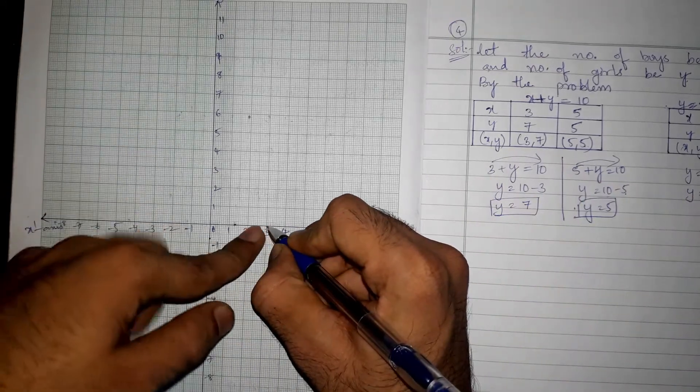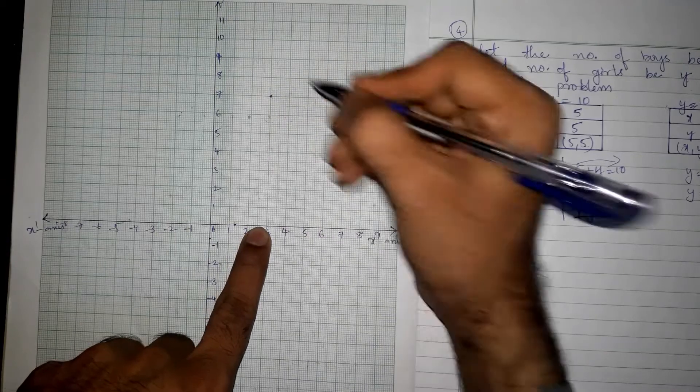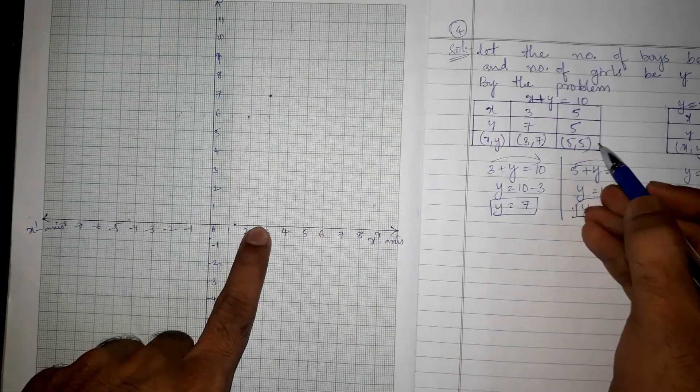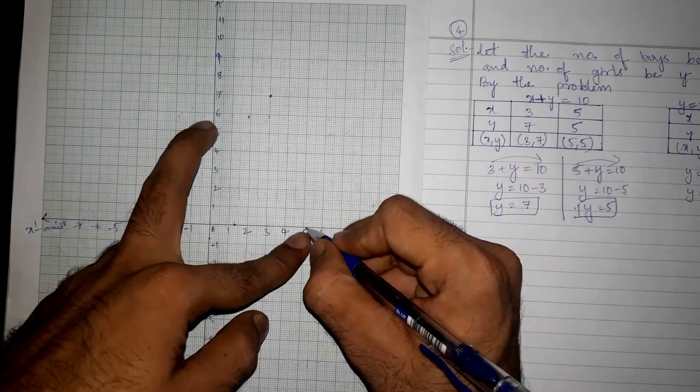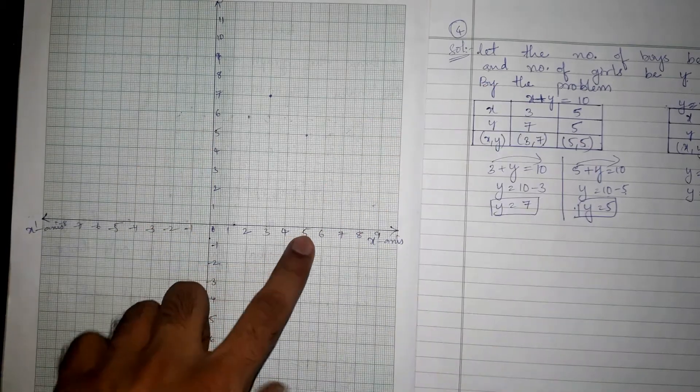Let us plot the points. So 3 comma 7 - on x 3, on y 7, so it is here. Next 5 comma 5. Let us join this two.